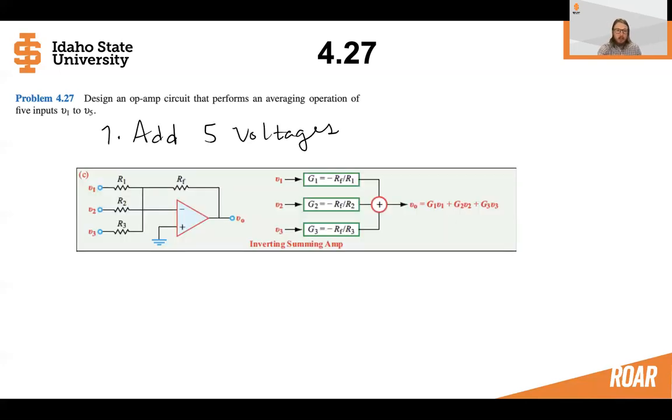So first, let's take a look at something that we already know can add five voltages, and it's even in the name, right? A summing amplifier. We can look at the table in the textbook, and this table's on page 216 in the Ullaby 3rd edition. In this table, it shows you an inverting summing amplifier. So this is great. We can see that if we have three different inputs, we can sum them and get an inverted output.